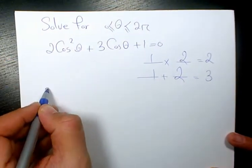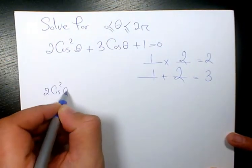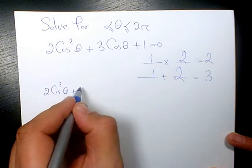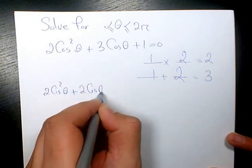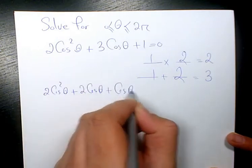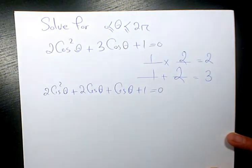Then I will have here 2 cosine squared theta plus, instead of 3 cosine, I put 2 cosine theta plus 1 cosine theta plus 1 equals to 0.